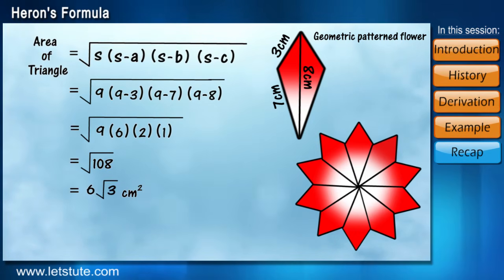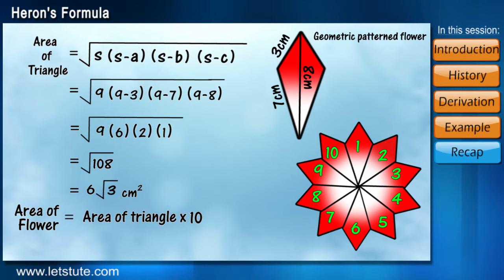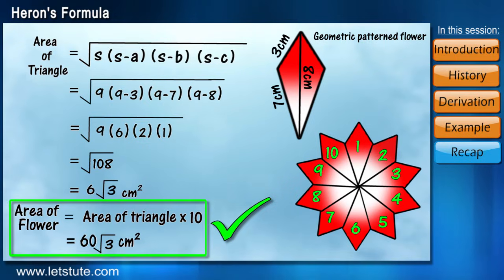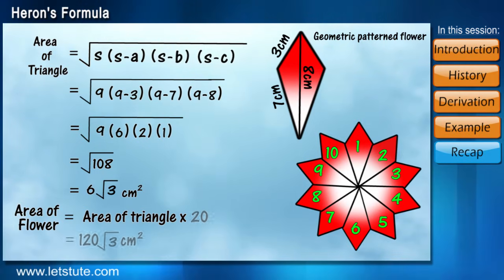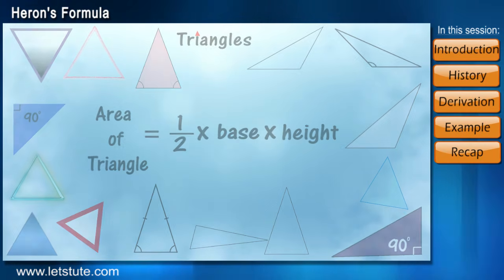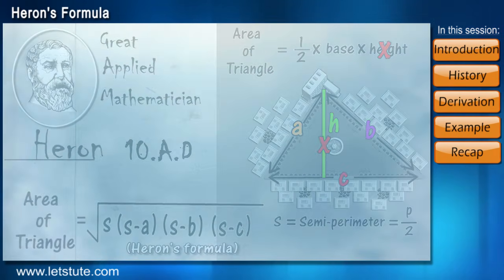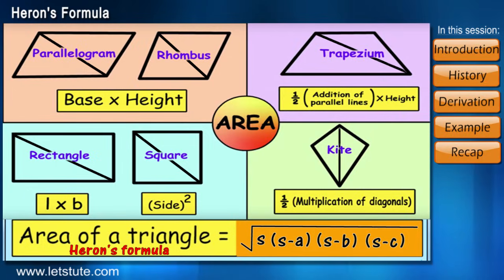Now, as there are 10 petals total, we will multiply it by 10 to get the area of the flower. Right? No, we will multiply it by 20 because we have calculated only the area of half of the petal. Isn't it? This could have been a very natural and tentative mistake and yet a very stupid math mistake which could have been avoided easily just by concentrating a little more.